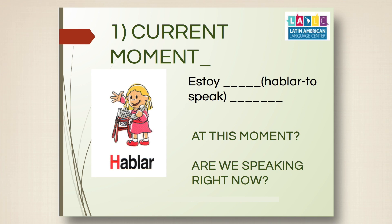The first use is what we do at the current moment. For example, can you change 'hablar' to the -ando form? Very good — 'hablando' is correct. Estoy hablando means 'I am speaking.' This is used for what you are doing right now, at this exact moment.